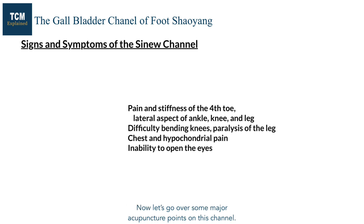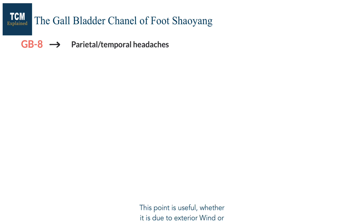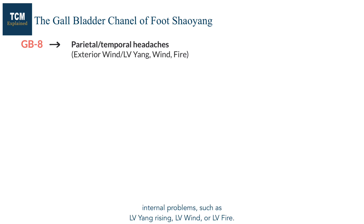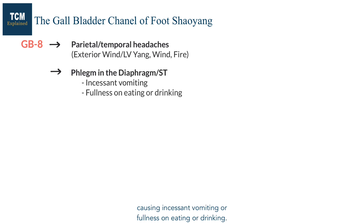GB8 is the major point for treating parietal and temporal headaches, whether due to exterior wind or internal problems such as liver yang rising, liver wind, or liver fire. This point is also indicated for phlegm in the diaphragm and stomach causing incessant vomiting or fullness on eating or drinking.